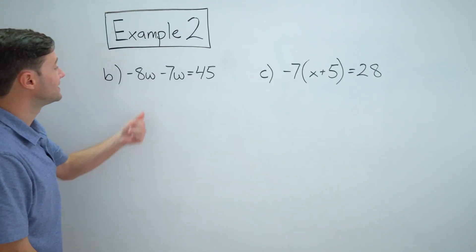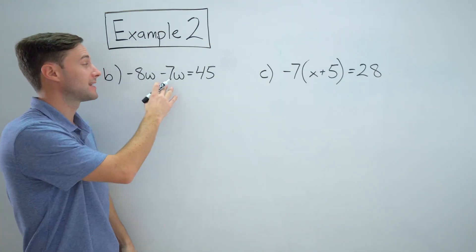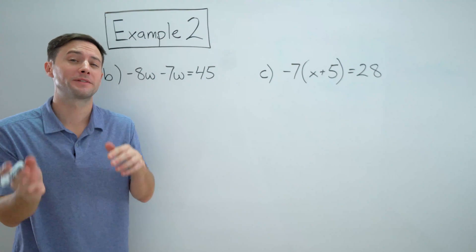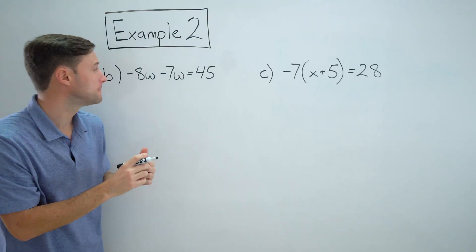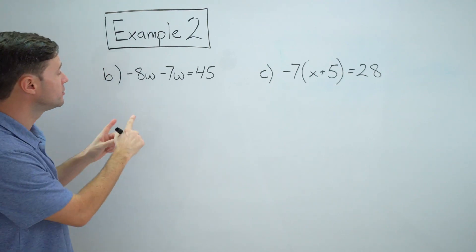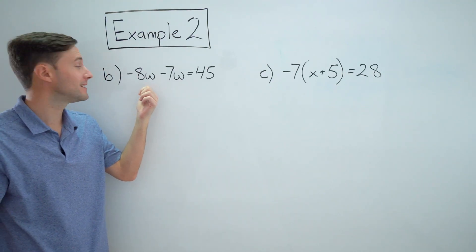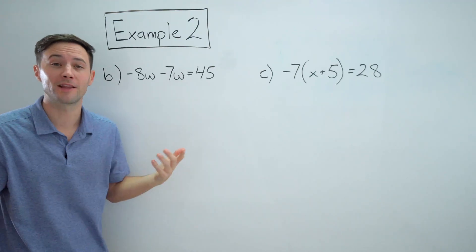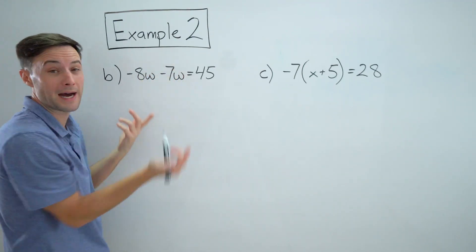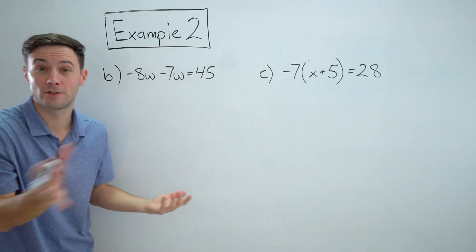All right, here we go with part B. Negative eight W minus seven W equals 45. Same thing we were talking about on part A. If we can combine any like terms, that's going to make our lives way easier. And the good news here is negative eight W and seven W are like terms. They have the same variable to the same power. It's just to the first power. So let's do that.